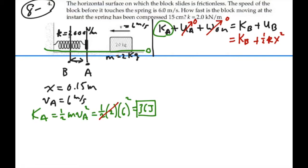So right now, it looks like the kinetic energy at A, which is 36 joules, is equal to the kinetic energy at B plus one-half kx squared.